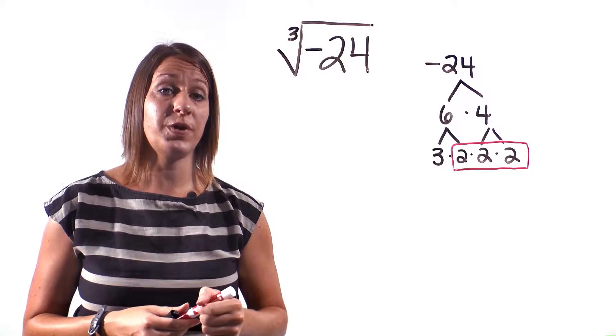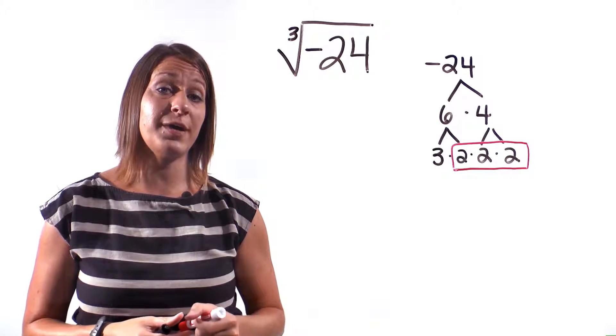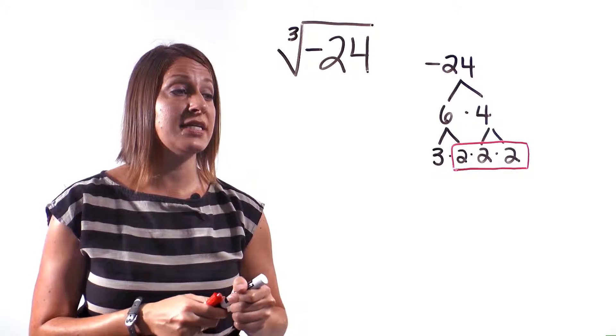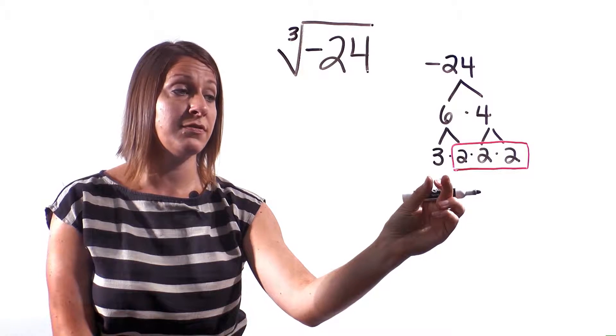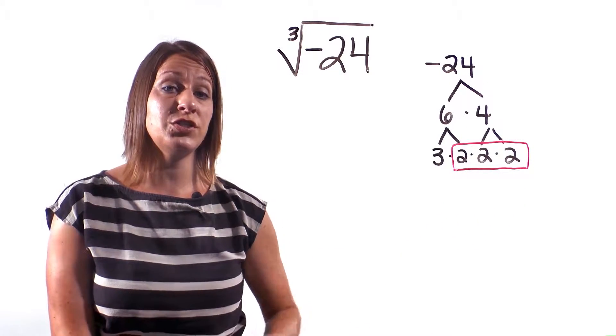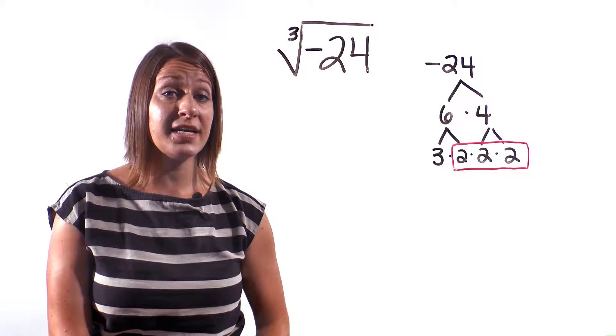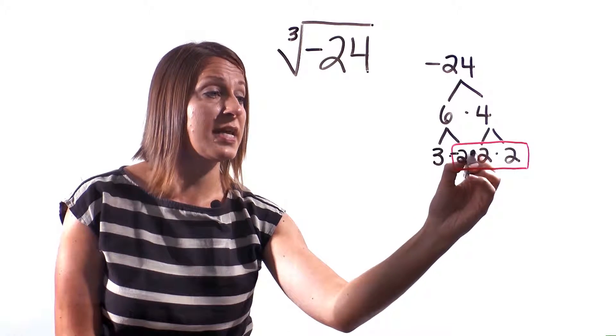So we're going to eventually put this 2 on the outside of our radical. But we need to remember that this was a negative 24. And in order for the problem to be negative, we have to multiply by a negative number. So in a situation like this, we need to make either our 3 negative, or all of our 2s have to be negative. Because we can't leave a negative number under the radical symbol, we need to make our 2s negative.